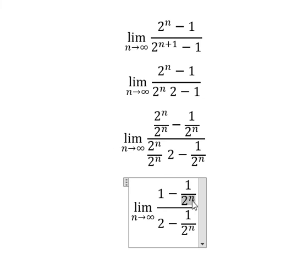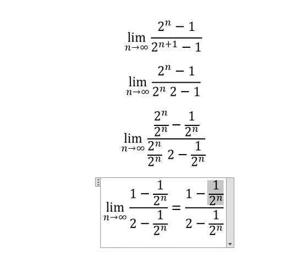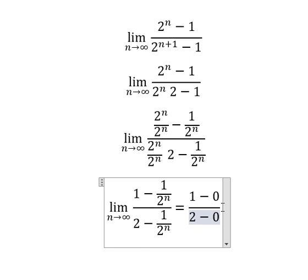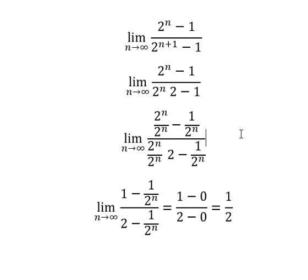this will go to positive infinity. One divided by positive infinity gives you zero, and we just have one over two. This is the end, thank you for watching.